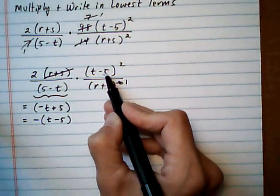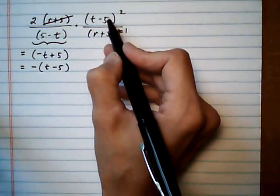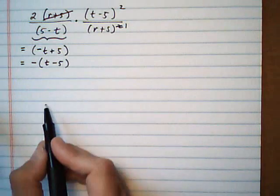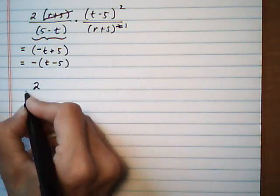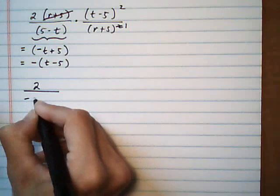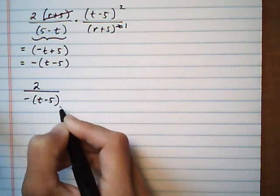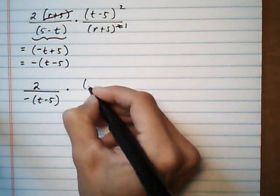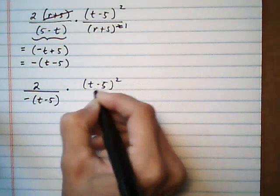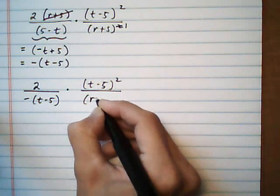But first let's just rewrite it so we can see what's going on with a little bit less visual clutter here. So we have a 2 over minus t minus 5 times t minus 5 squared all over r plus s.